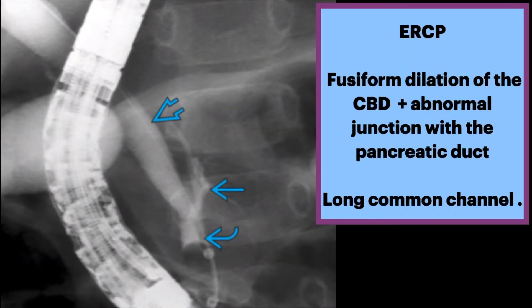ERCP in the same patient again shows fusiform dilatation of the common bile duct, shown by the open arrow. There is an abnormal junction with the pancreatic duct, creating this long common channel.